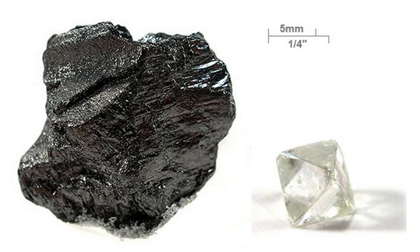The atoms of carbon can bond together in different ways, termed allotropes of carbon. The best known are graphite, diamond, and amorphous carbon. The physical properties of carbon vary widely with the allotropic form.